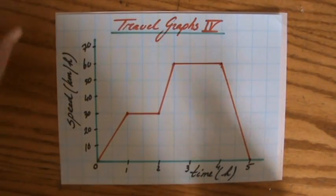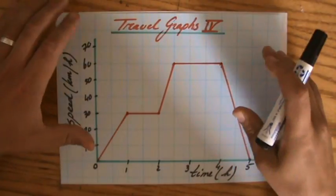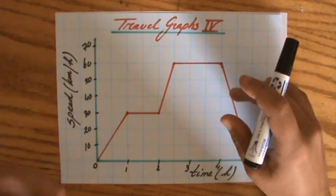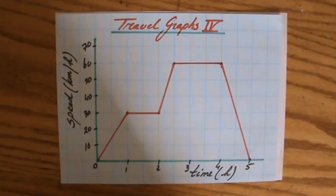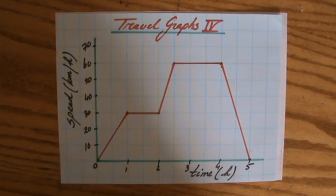Welcome to this video of ExplainingMaths.com. We are still looking at travel graphs. We have done distance-time graphs and now we are moving on to speed-time graphs.